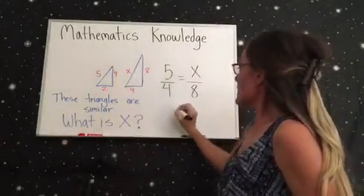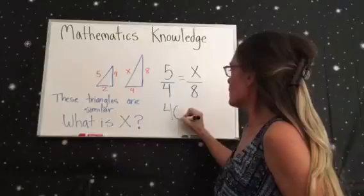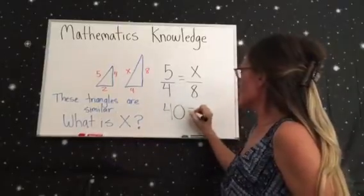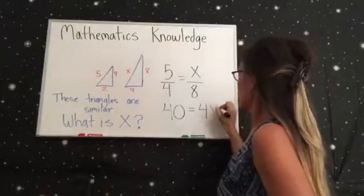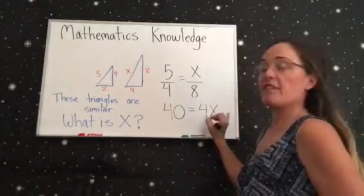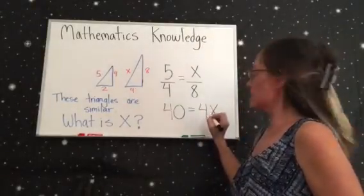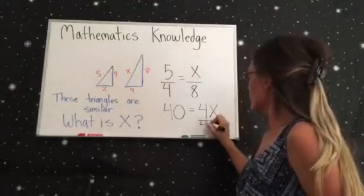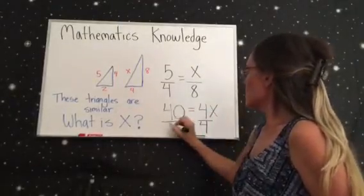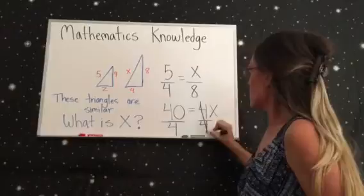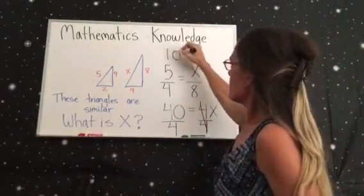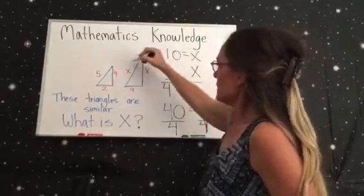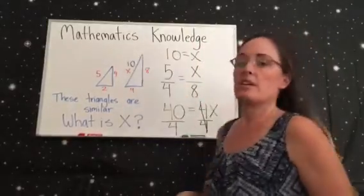So now you do 5 times 8, which is 40, is equal to 4X. And you're going to divide both sides by 4 to get X by itself, and 40 divided by 4 is 10. So 10 equals X, and that would be the number you put here.